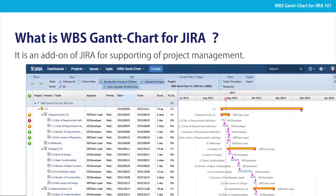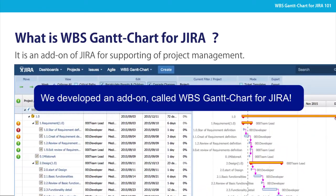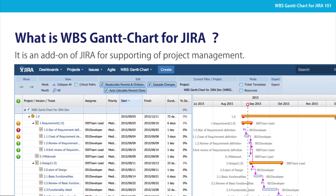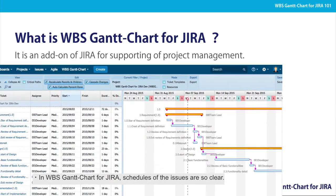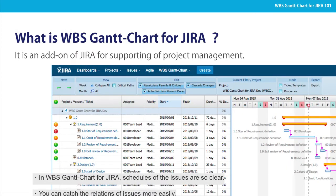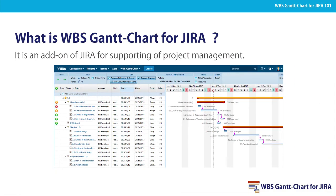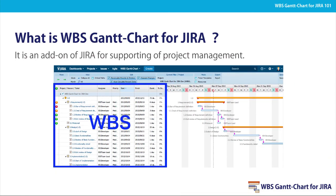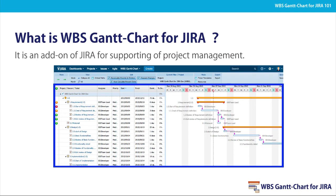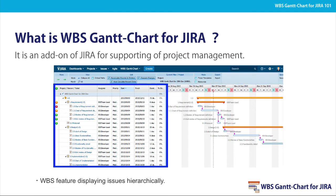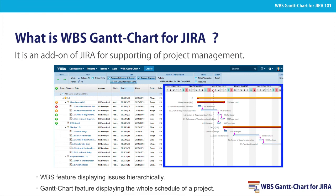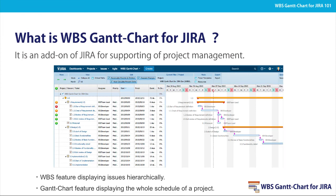Then, we developed an add-on called WBS Gantt Chart for JIRA. In WBS Gantt Chart for JIRA, schedules of issues are so clear. You can also catch the relations of issues more easily. As a feature, WBS and Gantt Chart are in one screen. There are WBS features displaying issues hierarchically and Gantt Chart features displaying the whole schedule of a project.